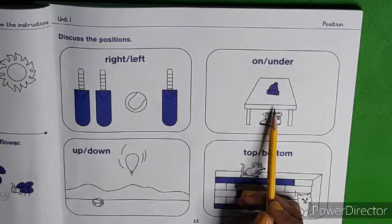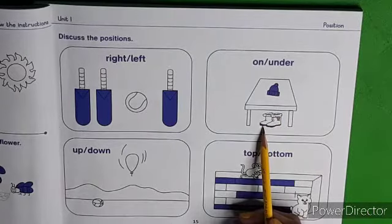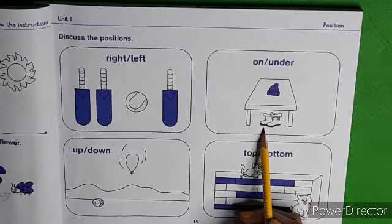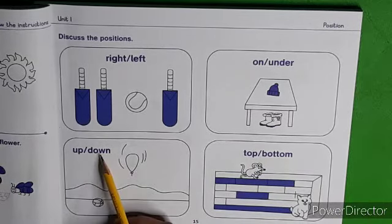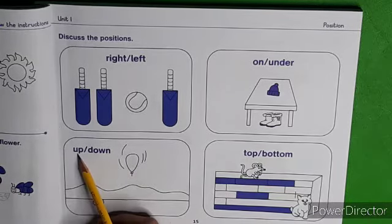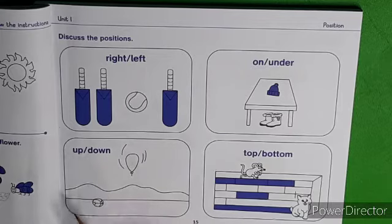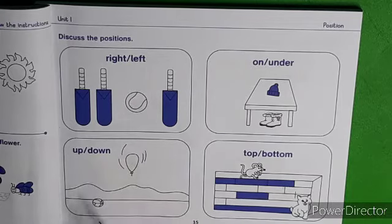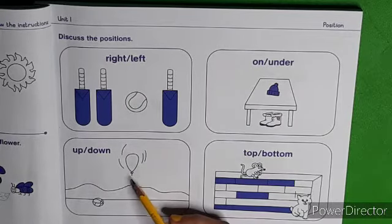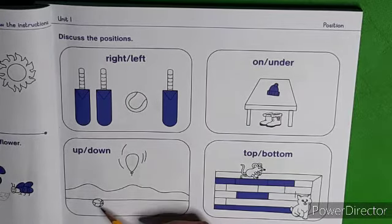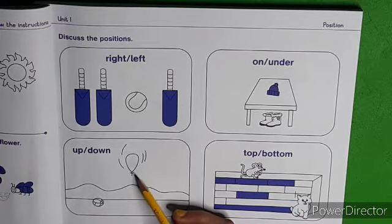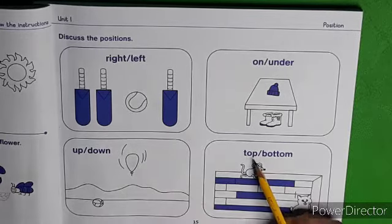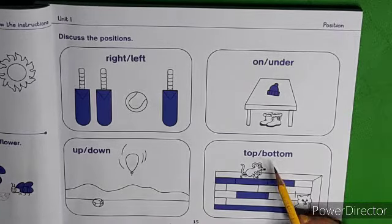The cap is on the table. Where are the shoes? The shoes are under the table. Up — Up का मतलब ऊपर. Down — Down का मतलब नीचे. Where is the ball? The ball is down on the floor. Where is the balloon? The balloon is up in the air. Top, Bottom —